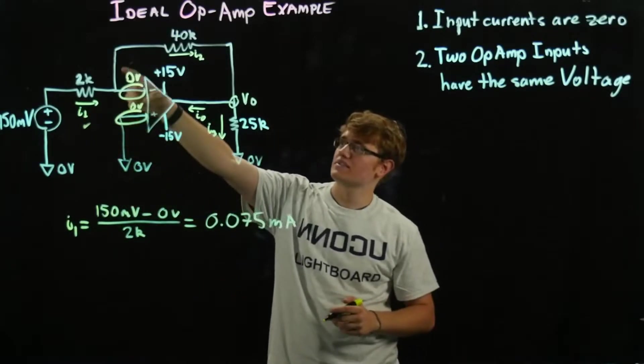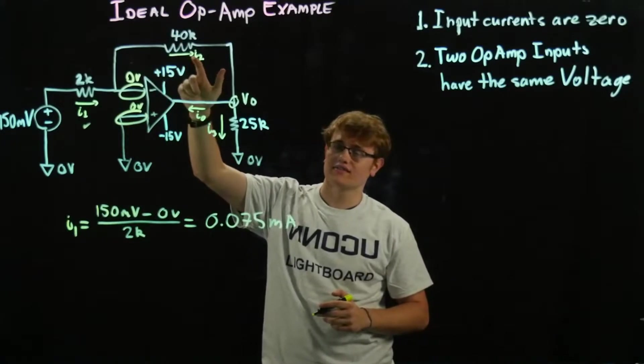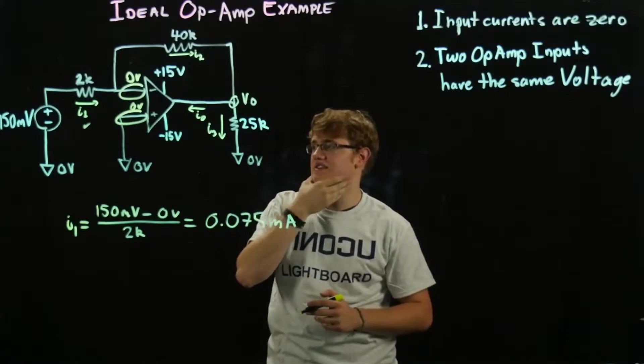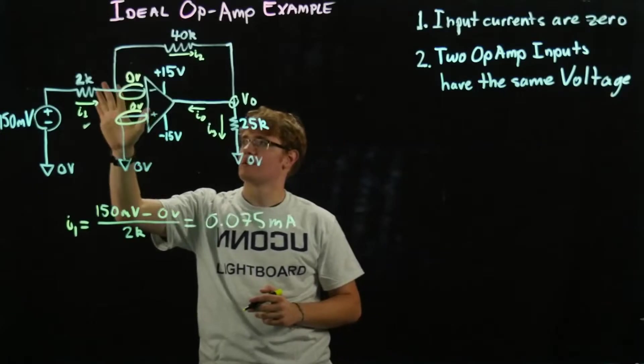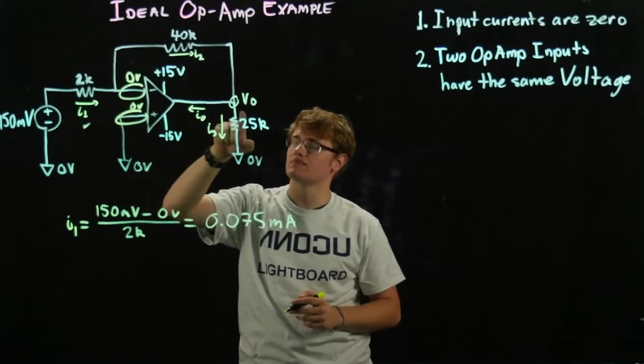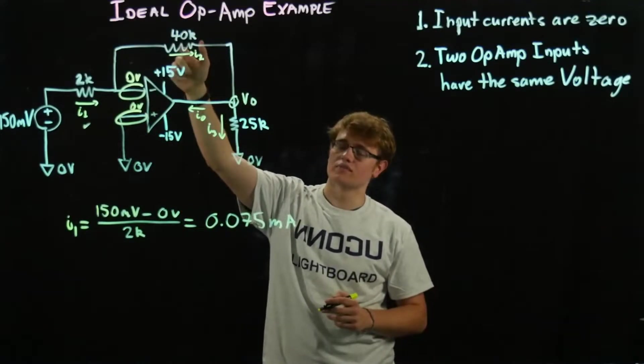So we're going to continue going around the circuit, we're going to try to find I2 next. Now I2, that's going to be difficult. Because we have a current going this way, we know this voltage, but we don't know this voltage here, so we can't use this voltage minus that voltage over the 40k.